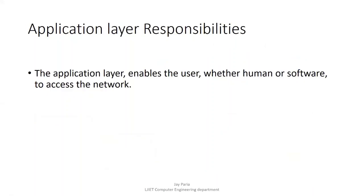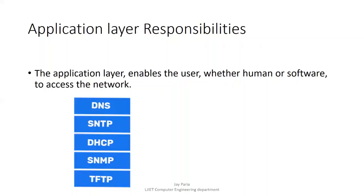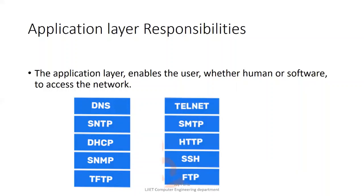The application layer enables users to interface with their device. There are many protocols available for the application layer, such as DNS, SNTP, DHCP, SNMP, TFTP, Telnet, SMTP, HTTP, SSH, and FTP — all of these protocols we are going to discuss. This was the brief information about each layer; we are going to discuss each and every layer in detail so you will understand better.